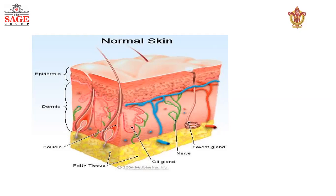The dermis generally contains sweat glands, blood vessels, oil glands, and nerve endings. The innermost layer, the hypodermal layer, contains majorly adipose tissues, which are fatty tissues. So this is the normal structure of the skin.